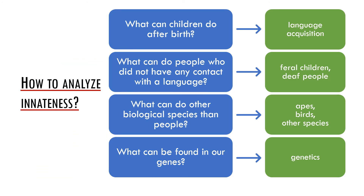As briefly discussed on one of the previous slides, the poverty of stimulus problem is a key argument for the existence of a language faculty. However, innateness may be analyzed based on various sources of information. We may ask what newborns can do and study the process of language acquisition. We can also focus on the abilities of people who did not have contact with a language for a certain period of their childhood. A completely different question is what animals can do — whether they can learn a language or what they can actually learn from language. And the last possible source of evidence may come from genetics: whether there are any genes responsible for language and its use. We will get to each of these questions in the next presentations.